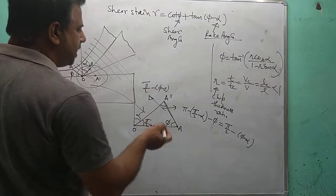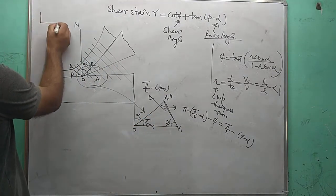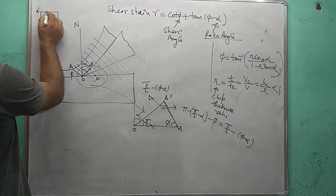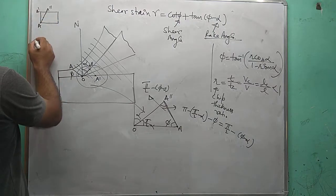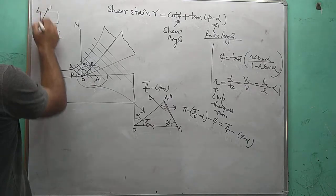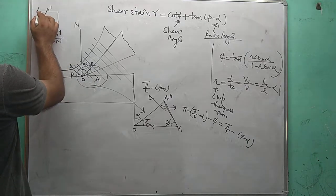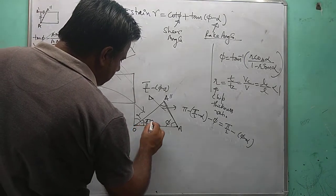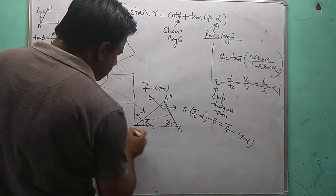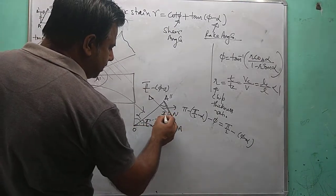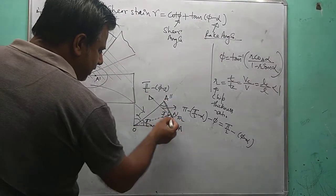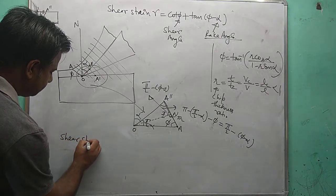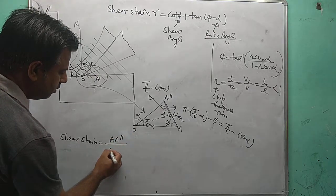Point A deforms up to A-dash. To find the shear strain, from the strength of materials, suppose A-A-dash deforms under the influence of shear force to A-double-dash. Shear strain equals A-A-dash over the normal distance. We project the normal from O — here O-N is the normal, with 90-degree angles on both sides — giving two right-angle triangles.